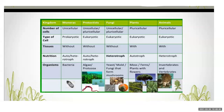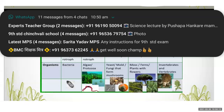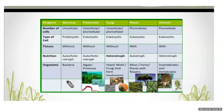Examples: Kingdom Monera — bacteria. Protista — algae, protozoa. Fungi — yeasts, molds, mushrooms. Plantae — mosses, ferns, plants with flowers. Animalia — invertebrates and vertebrates. These are the examples of the five kingdoms.